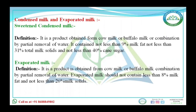First we talk about sweetened condensed milk. This is the product obtained from the milk of buffalo or cow by partial removal of water. It should not contain less than 31 percent of total solids and not less than 40 percent of cane sugar.